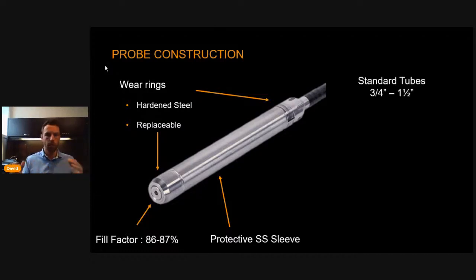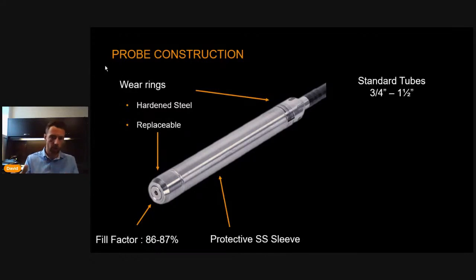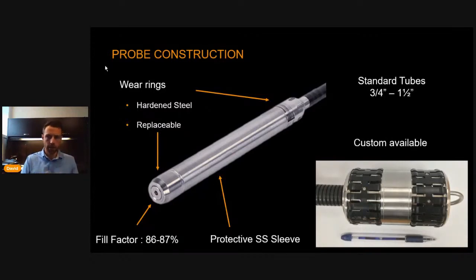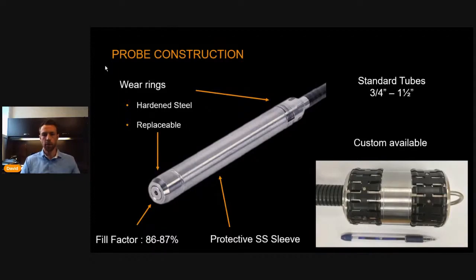We have standard diameters from about three-quarters of an inch to one-and-a-half inches with different thicknesses — those are the most standard products. We have many different diameters available, and for special cases, we also have custom availability — for example, one massive NFA probe designed just for one client. This is something to keep in mind for special applications.